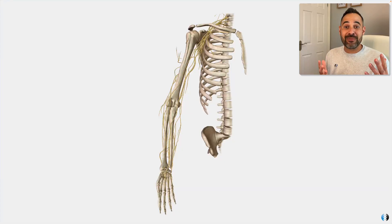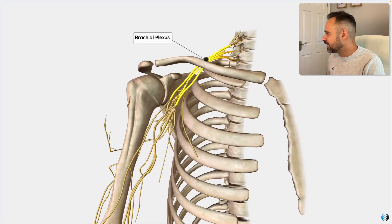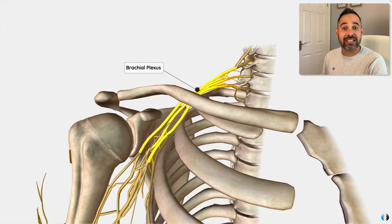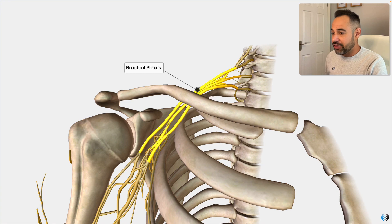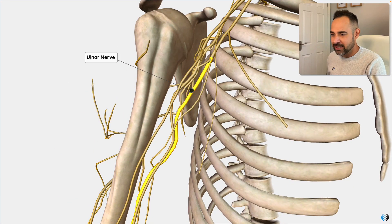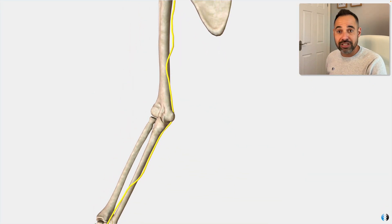There's only one place to start with cubital tunnel syndrome and that is with our 3D anatomy model. The ulnar nerve is one of the terminal branches of the brachial plexus — the major network of nerve fibres that creates the neural system for most of the nerves within the arm. The ulnar nerve exits the brachial plexus and runs down the medial or inner side of the arm towards the elbow.